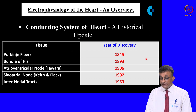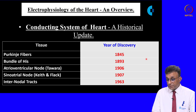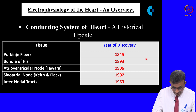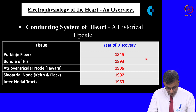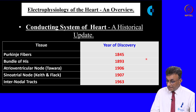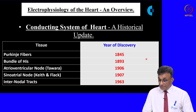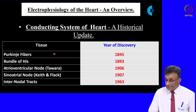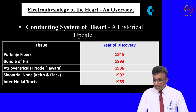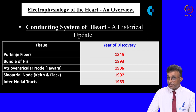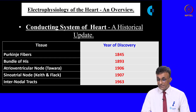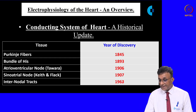This slide gives a historical update about the discovery of the conducting system. Even though the conducting system terminates with the Purkinje fibers, they were the first part to be discovered in 1845. The inter-nodal tracts — anterior, middle and posterior — were the last to be discovered in 1963.